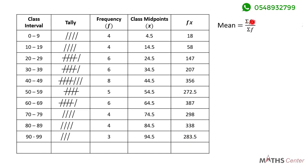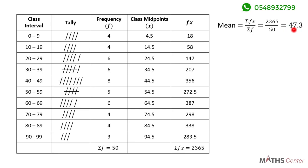We need sigma fx, so we add all the fx values. When you add them you get 2365. We also need sigma f, so we add all the f values and get 50. We now have sigma fx and sigma f so we can find the mean. The mean equals sigma fx, which is 2365, divided by sigma f, which is 50. That gives us 47.3. So the mean mark is 47.3 percent.